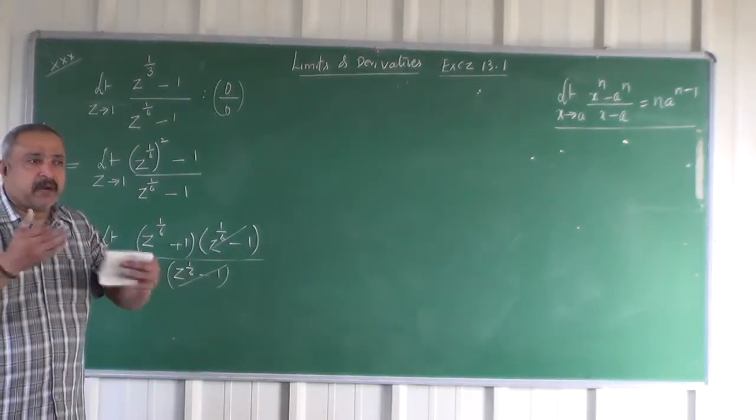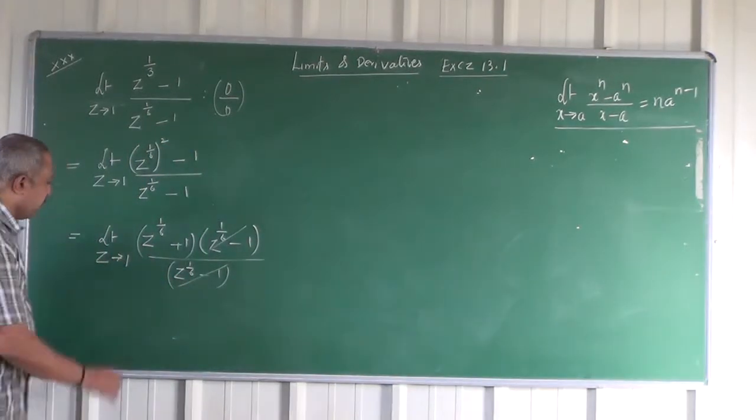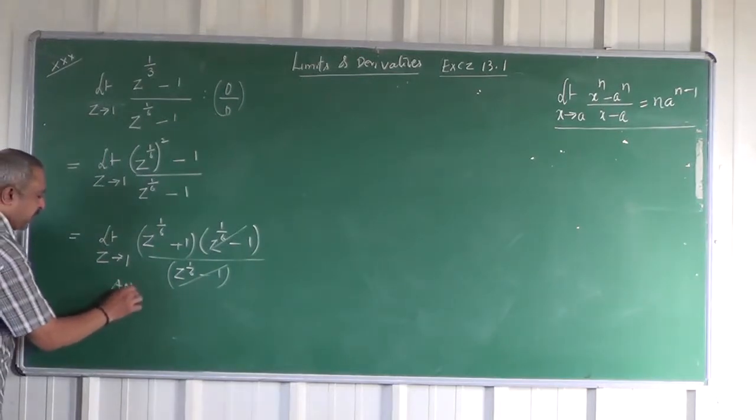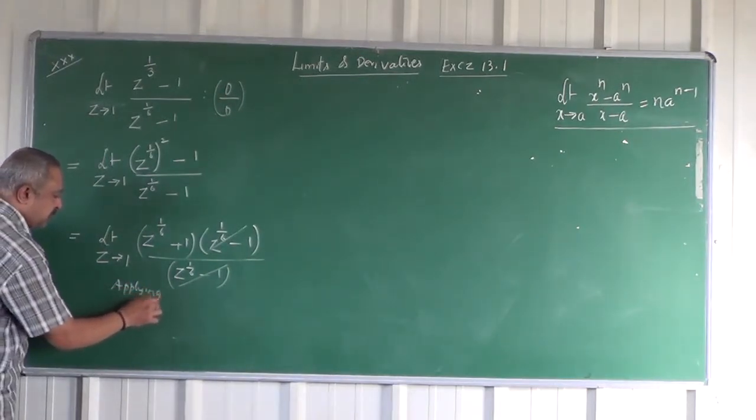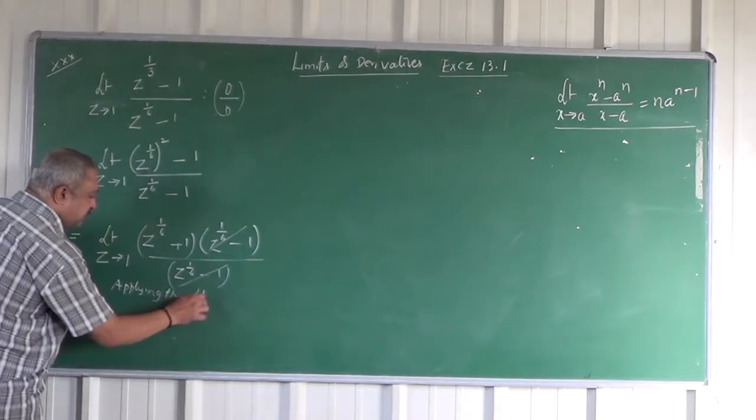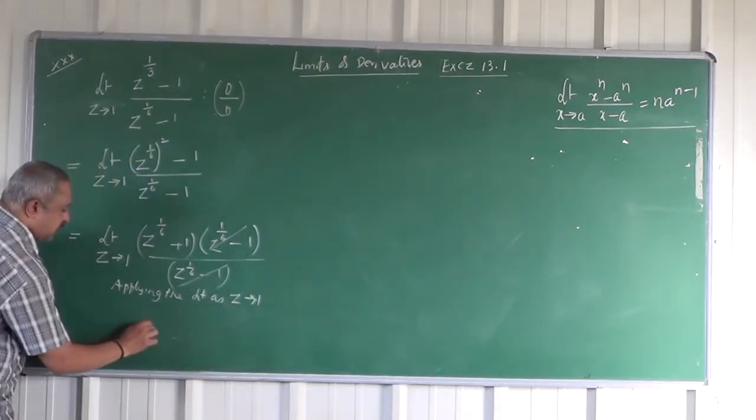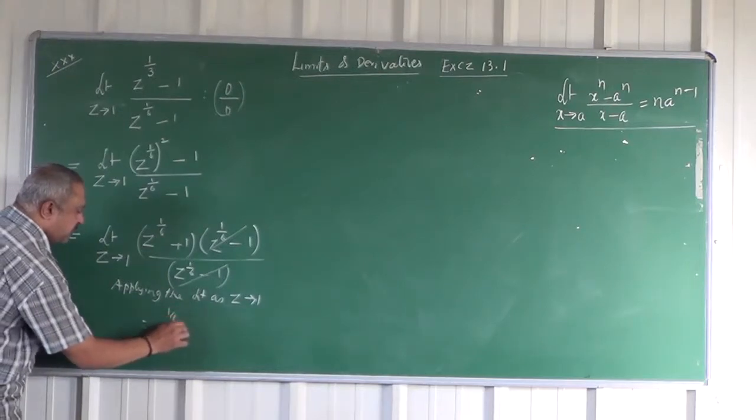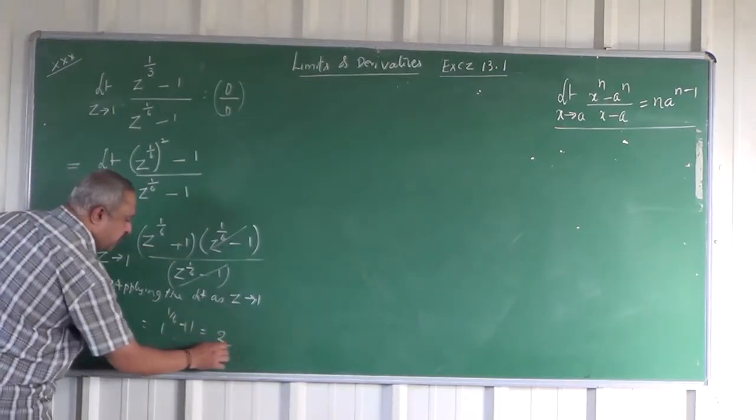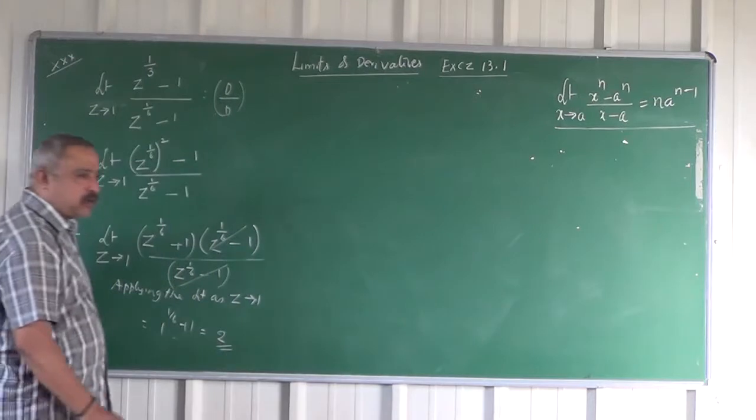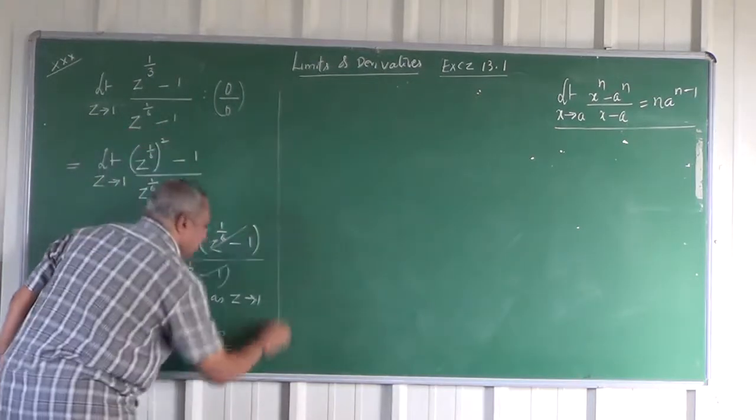So that you cancel these two factors of denominator and numerator, by which the indeterminate form will go. Now applying the limit, as Z tends to 1, this is 1 to the power of 1 by 6 plus 1, that is nothing but 2. So the limit is 2.